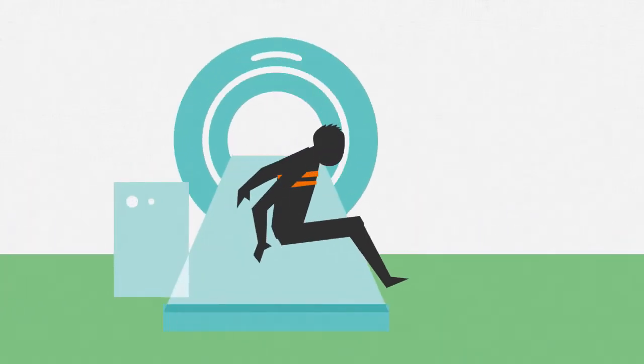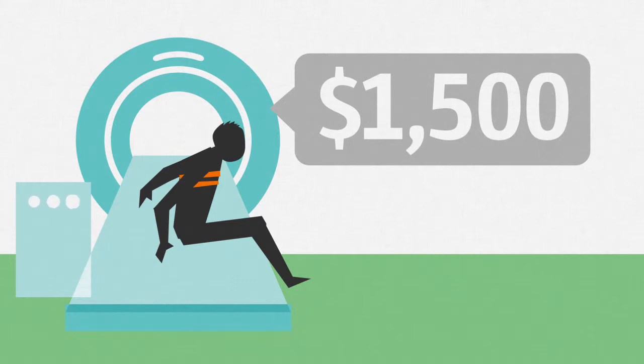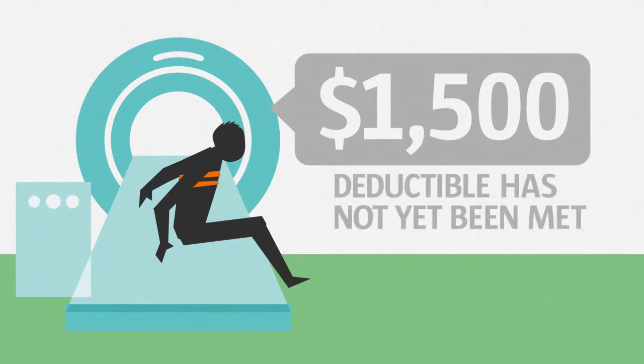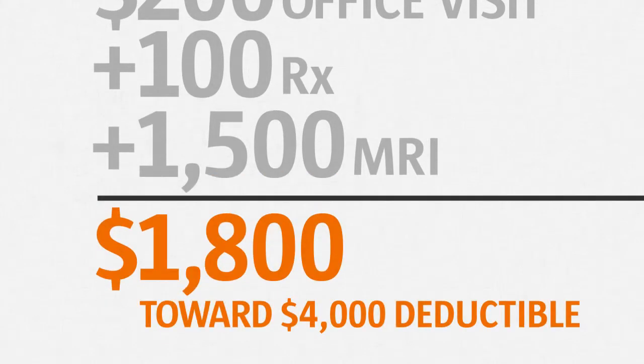When the doctor tells John he needs an MRI, John pays the full $1,500 for the service because his deductible has not yet been met. That's a total of $1,800 towards John's $4,000 family deductible.